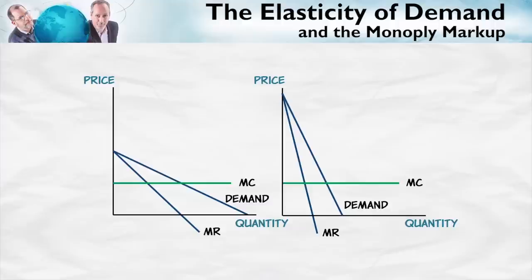Now that we have the intuition, let's test it with some diagrams — some demand curves. We have two demand curves. Which is more elastic, the demand curve on the right or on the left? The demand curve on the left is more elastic. The demand curve on the right is more inelastic. So going by our intuition, we should expect a low markup on the left and a high markup on the right.